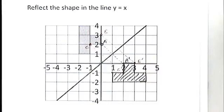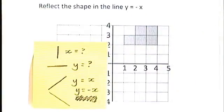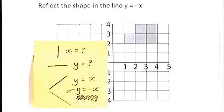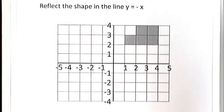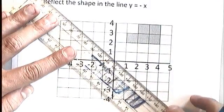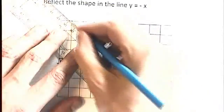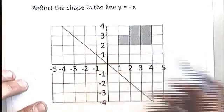Right, one last one then. We need to try this one, which is the fourth type of line that you can see. It says reflect the shape in the line y equals minus x. And if we have a look again at the sticky note, y equals minus x was this last one that I got wrong to begin with. y equals minus x. It looks like that. It's a diagonal line which passes through these points here. Let's just check if we can get that right. There we are. So that's my mirror line.